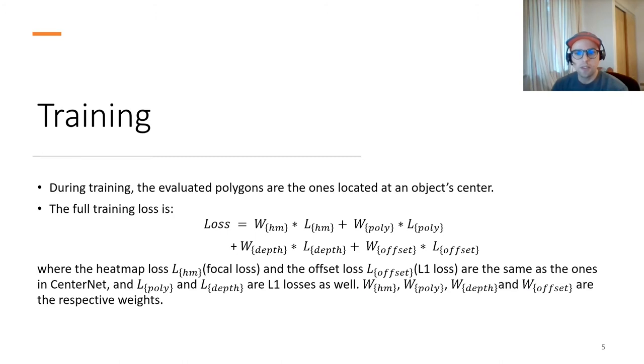So as we just saw on the previous slide, we produce a polygon volume. But during training, the evaluated polygons are the ones located at an object center. So we produce a mask to hide the values of the other polygons in the polygon volume. And we do that because during inference, the polygons we'll use are the ones that are at an object center's location.